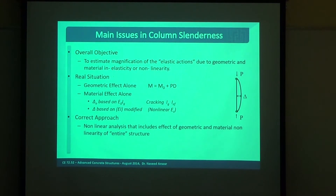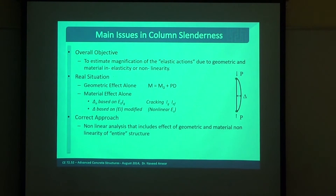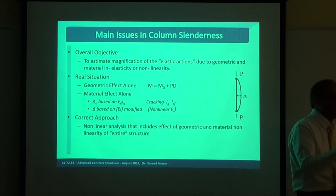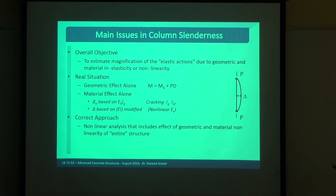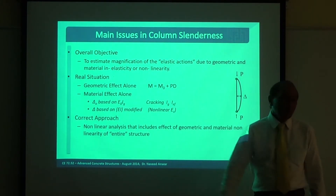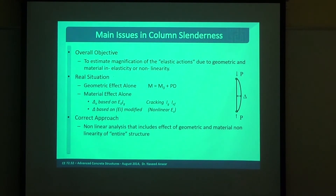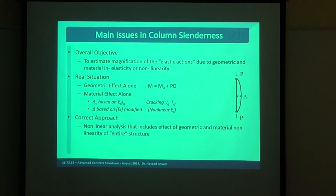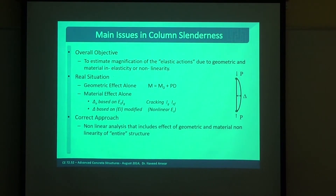The real solution is too complicated and almost nobody attempts it, especially for reinforced concrete. For steel, we can do it more easily because E and I are constant and do not change. But for reinforced concrete, both E and I change, so deflection is very hard to estimate accurately. So what is the simplified approach? The building design codes come to help us and make it simple.